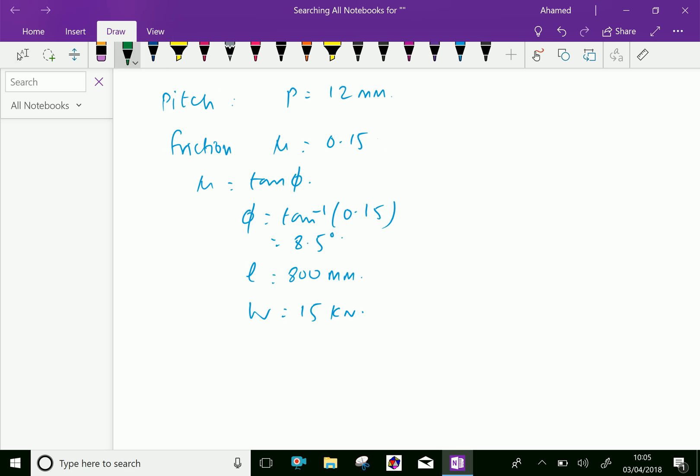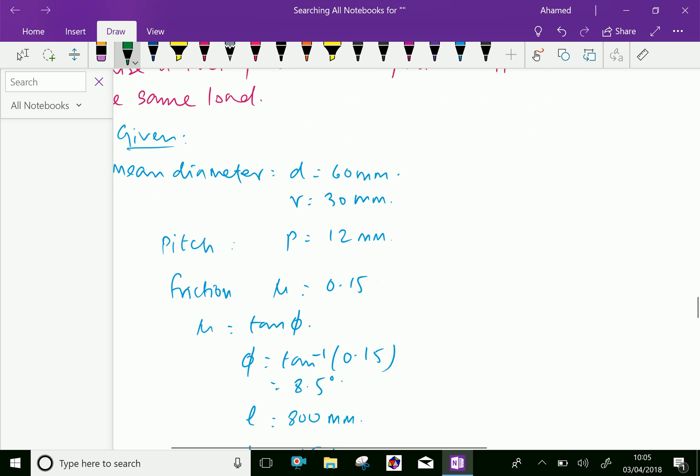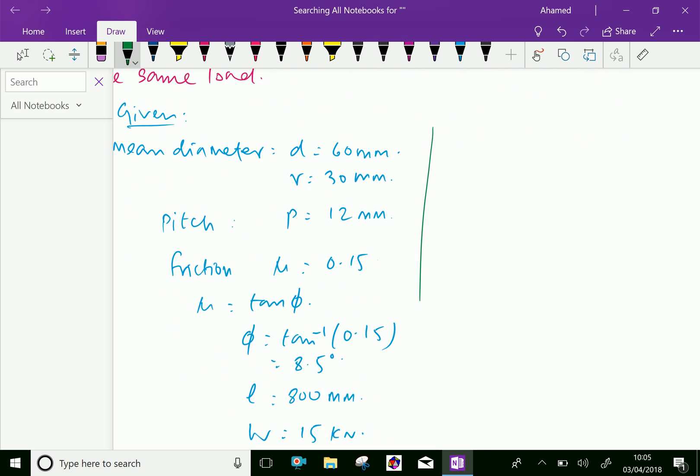Now, we have a relation. Tan alpha equals P by pi D. That is 12 over pi into 60. Let us calculate this. 12 divided by pi, 3.14 multiplied by 60.